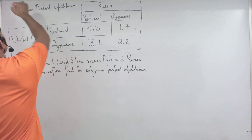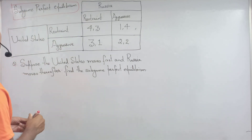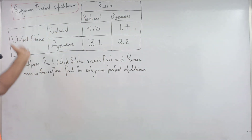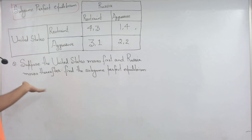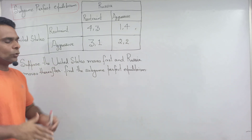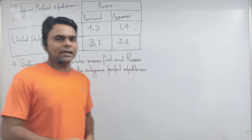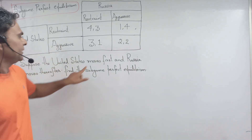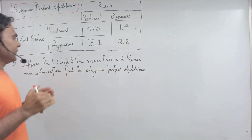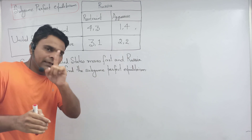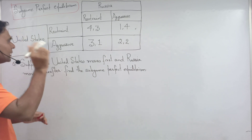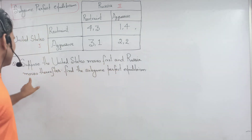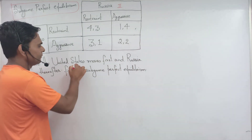Sub-game perfect equilibrium. There are two players in this game: the first player is the United States and the second is Russia. Both players have two strategies: restrain and aggressive. Suppose the United States moves first, meaning the United States becomes player one and Russia becomes player two. United States moves first and Russia moves thereafter. Find the sub-game perfect equilibrium.